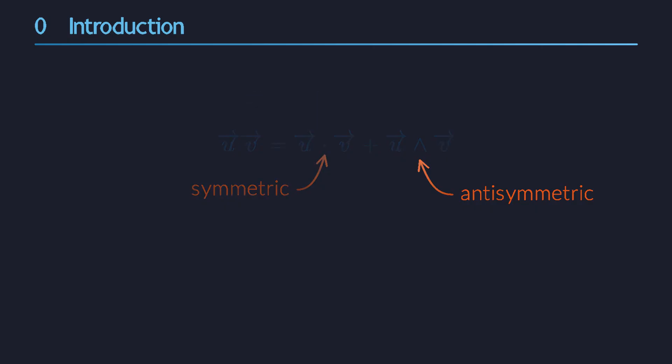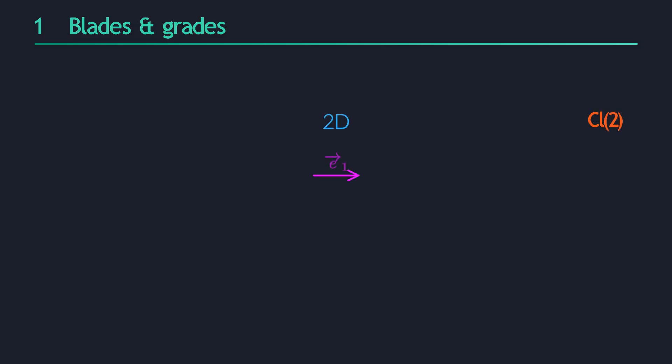Since this formula forces us to add objects of different types together, we should first figure out how many different types of objects there are. In this video we start from a two-dimensional vector space with basis vectors e1 and e2. We will construct a few additional objects. In fact, we're going to build a basis for CL2.